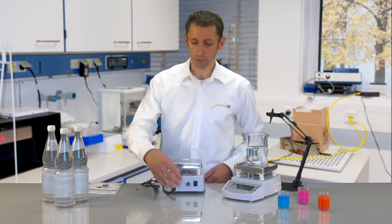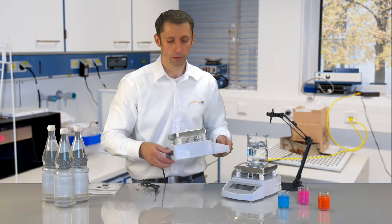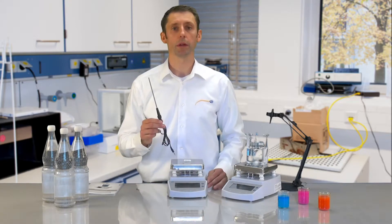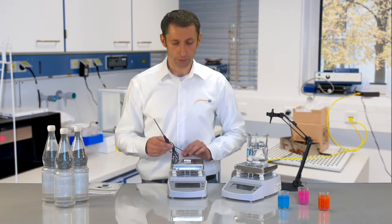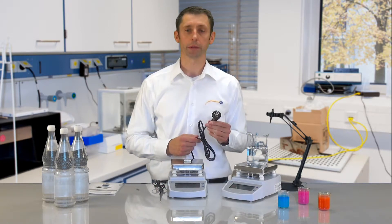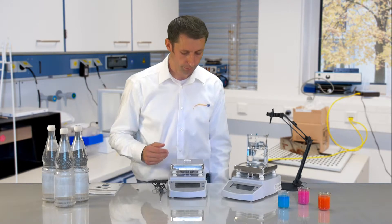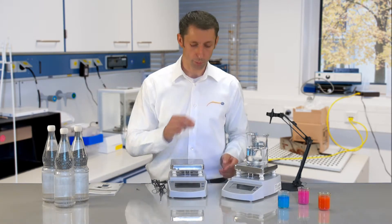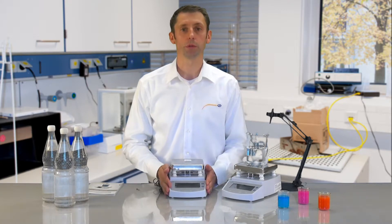The construction of the magnetic stirrer is very simple. You connect the temperature sensor, after this plug the magnetic stirrer into the mains, sink then the stirring rod into the probe, and then you can start your measuring.